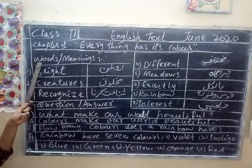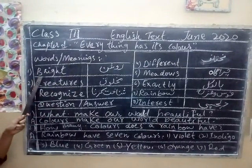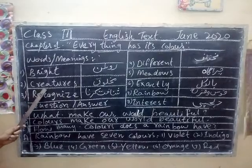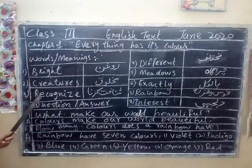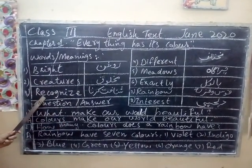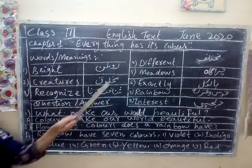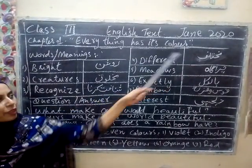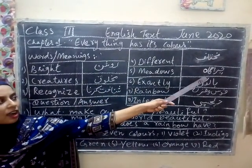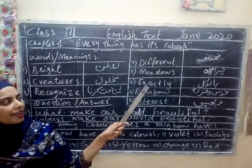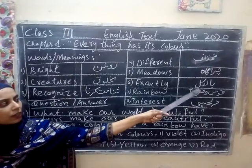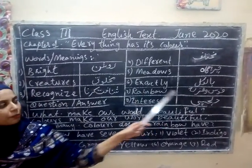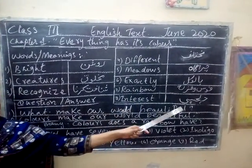Now start Words and Meanings. Bride — Roshan. Creatures — Makhlouk. Nikonais — Chanakkarna. Different — Mokpalit. Meadows — Chiraga. Exactly — Bilkul. Rainbow — Aosokaza. Interest — Vilsa Spi.